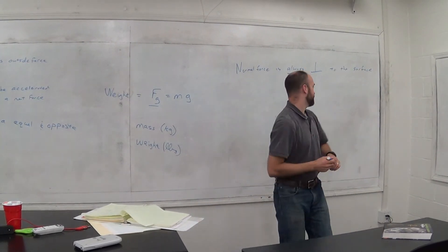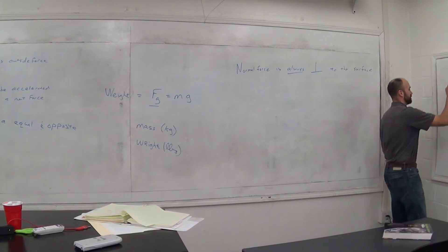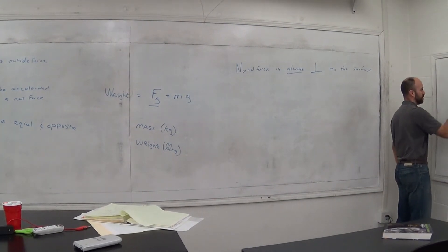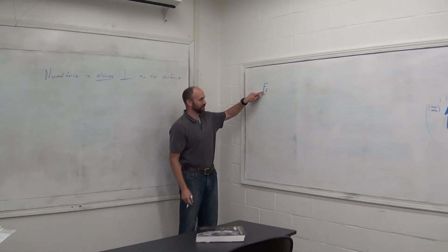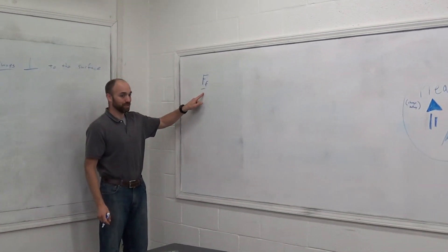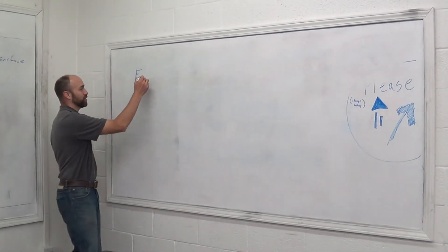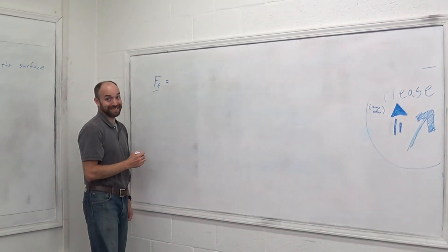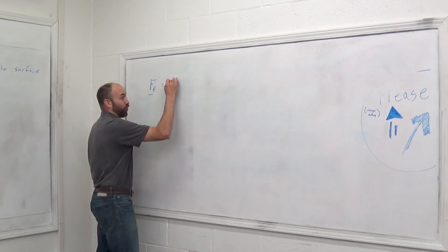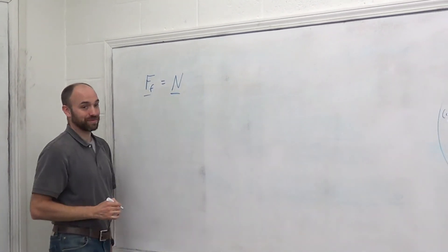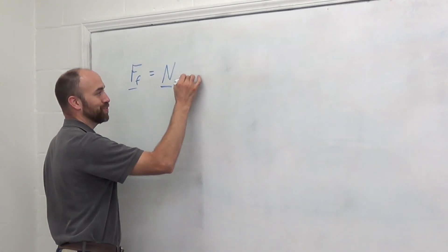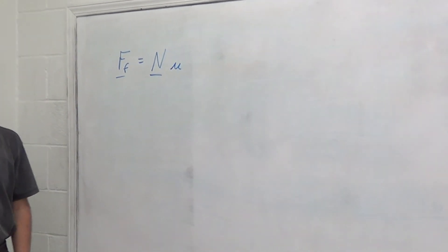Last point. Friction. The force of friction. Big F is force, little f is friction. What's the underline mean? Vector. The force of friction is equal to the normal force, which you now know, times mu.